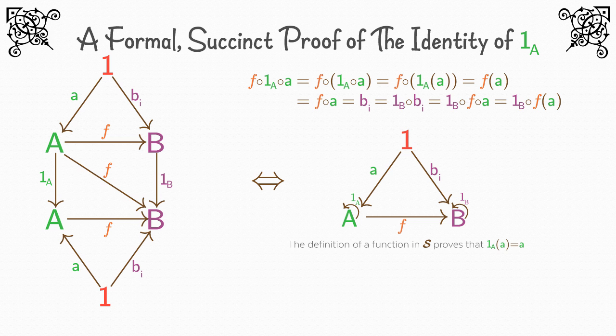But I would like to discuss one more thing about the terminal object before we end. It's a subtle point, but one that will have huge consequences for us. Remember we said that limits are objects L, possibly with zero or more maps to other objects, such that for all objects X in the category, there's a unique map X to L, such that the diagram L may be a part of commutes.